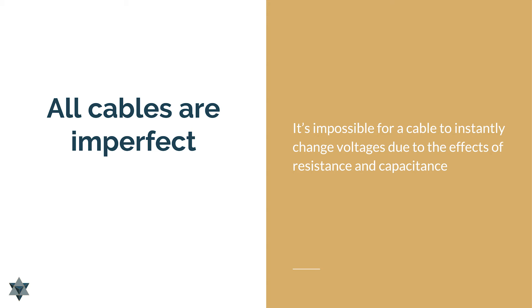It's also important to understand that all cables are actually imperfect. It's impossible for a cable to instantly change voltages because cables have resistance and capacitance — they resist changing their voltage to a degree, and that varies depending on the metals used. They also hold electrons to a degree. So if you want the cable to swing from 0 to 3 volts, what's actually going to happen is there's a slight lag. And if you then want to move the cable from 3 volts back down to 0, you'll experience a very slight delay. Given that your DAC is measuring thousands of times a second, any of those slight variations in how quickly the cable raises or lowers voltage can affect what your DAC sees and influence the sound you hear.